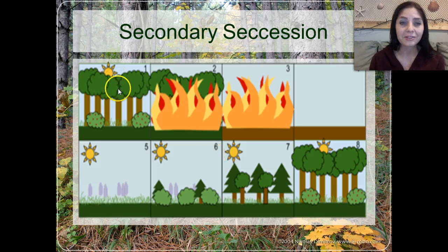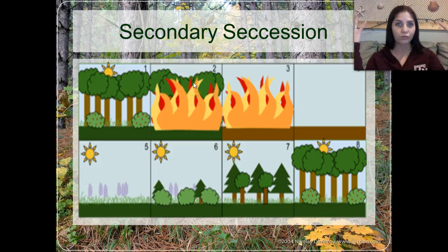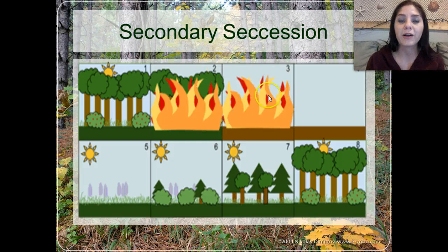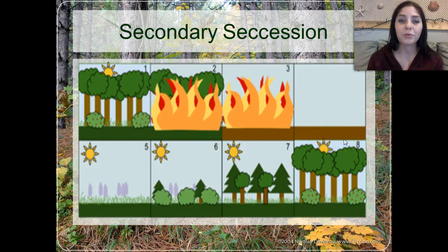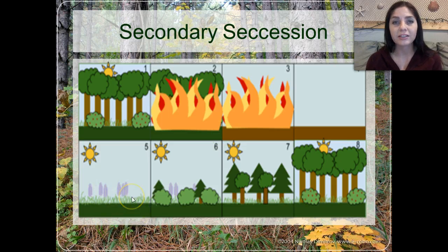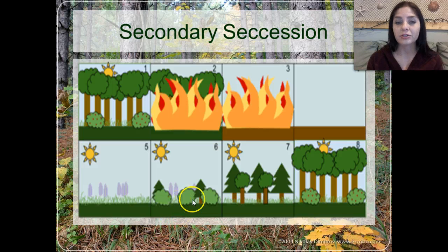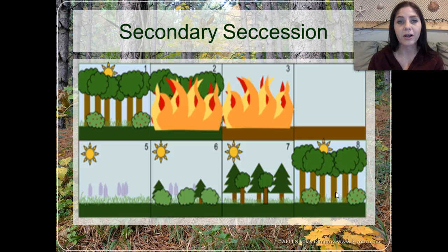Here we have our happy little ecosystem with our trees and our plants, and then — poof — forest fire. Fire burns and basically kills everything off except the soil. Now, in the soil, we still have seedlings and that type of thing that remain. So we start having little grasses and shrubs start to grow, small seedlings or sapling trees start to grow, and they'll eventually get larger and larger until we reach another climax community.